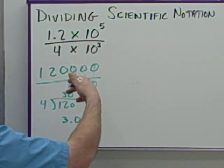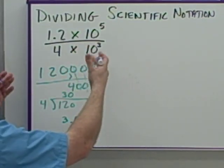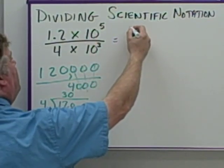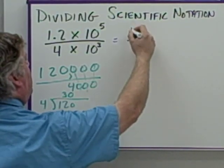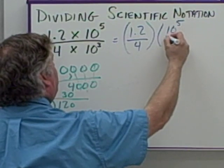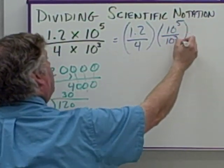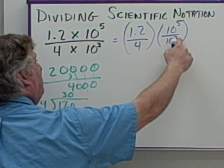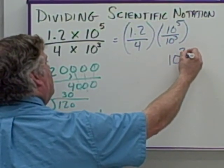Remember, when we were asked to simplify expressions that had like bases, we said this would be the same as saying 1.2 over 4 times 10 to the 5th over 10 to the 3rd. We subtract these bases. 5 minus 3 gives me 10 to the 2.